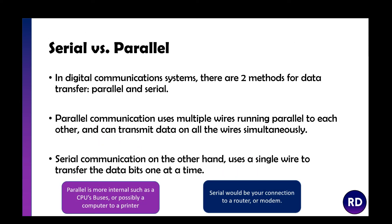There's also serial transmission versus parallel transmission. Parallel communication uses multiple wires running parallel to each other and can transmit data on all the wires at the same time, whereas serial uses one wire and transfers bits one at a time. We use parallel for internal things such as CPU buses or a computer to a printer, and serial for connections to a modem or internet. The longer the wire, the more things get out of sync, so parallel doesn't work well over long distances.